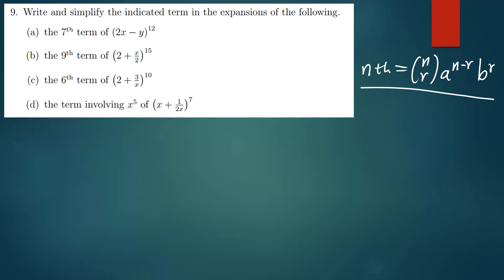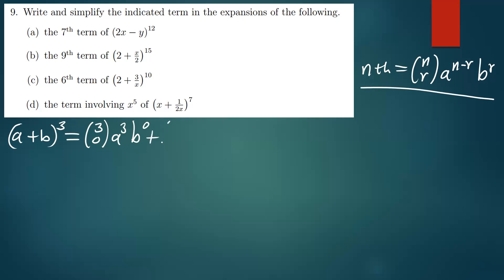We've been asked to find the seventh term of the expansion (2x − y) to the power 12. To find the seventh term, we need to find the value of r at the seventh term. Looking at the expansion with n = 3 as an example: the first term is 3 choose 0, with a to the power 3 and b to the power 0. The second term is 3 choose 1, with a to the power 2 and b to the power 1.